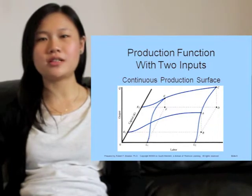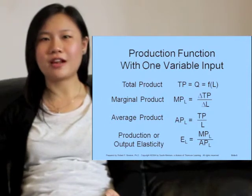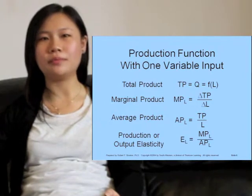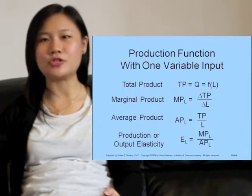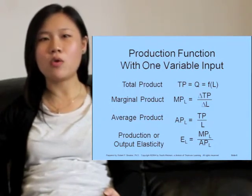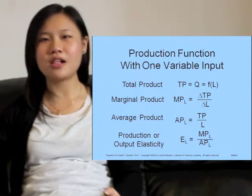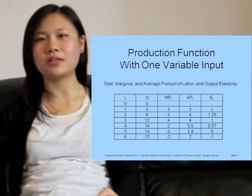By holding capital constant at one unit and using labor as a variable input, we can derive the total product of the variable input. The marginal product of labor is the change in total product per unit change in labor used, while the average product of labor equals total product divided by the quantity of labor used. The output elasticity of labor equals the ratio of marginal product of labor to average product of labor. The total, marginal, and average product of labor and output elasticity are calculated in this table.